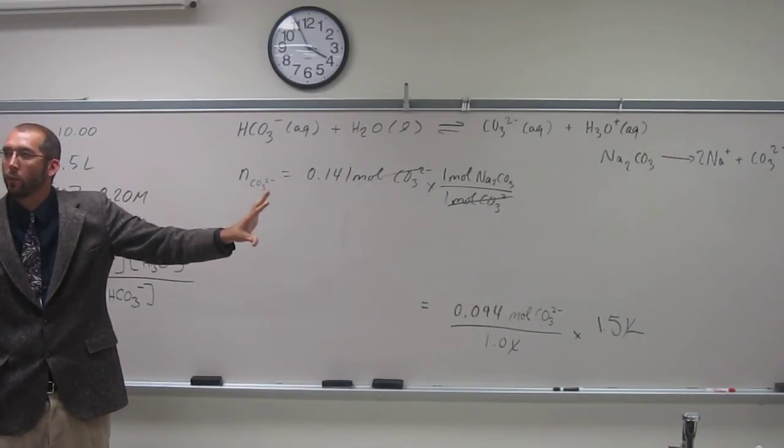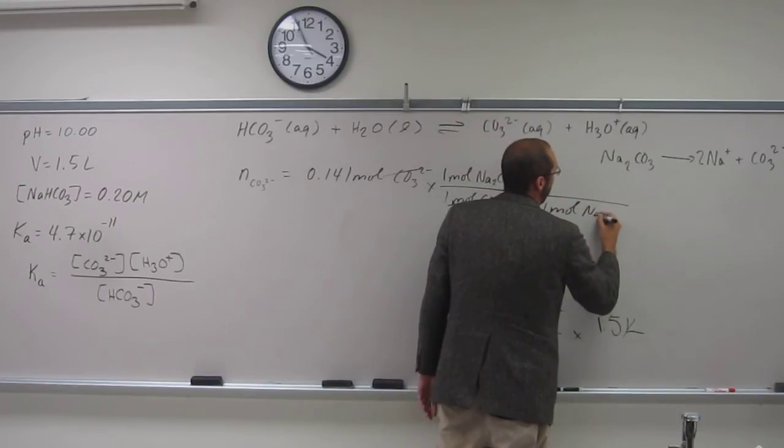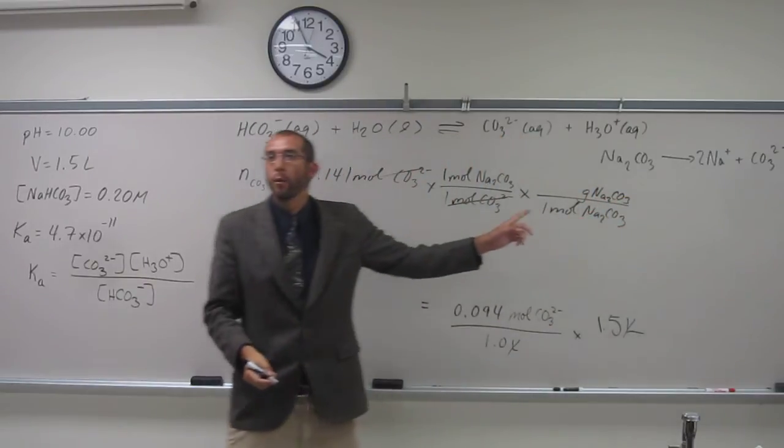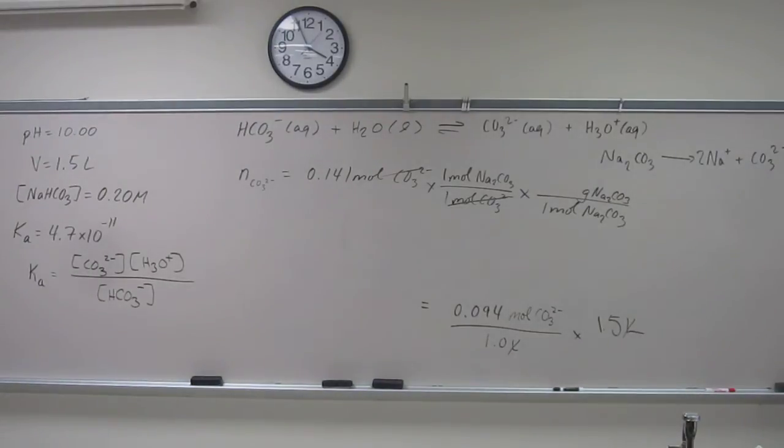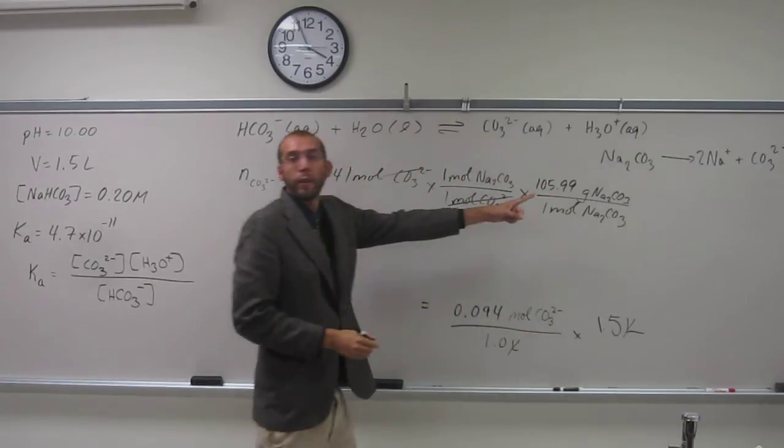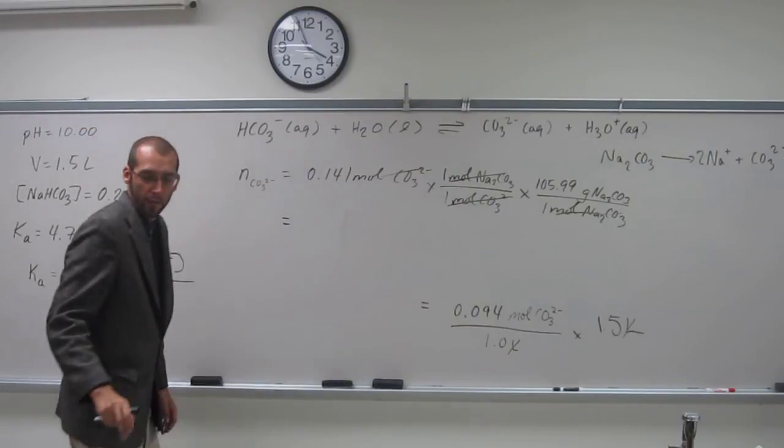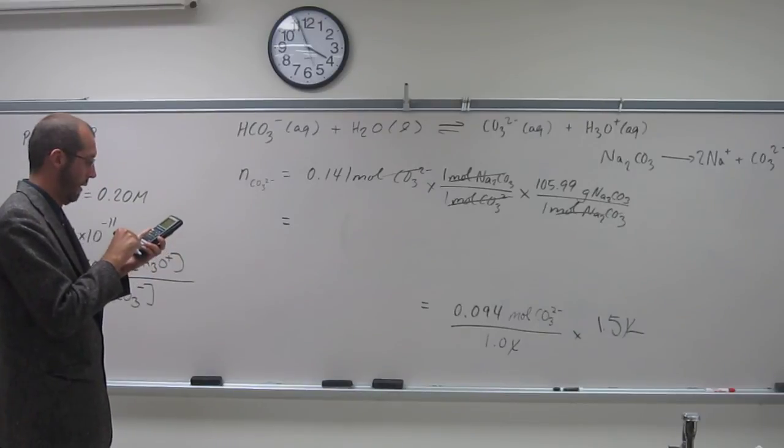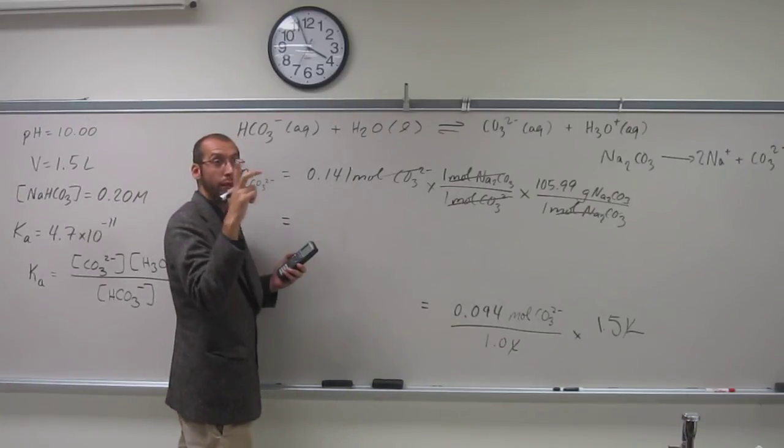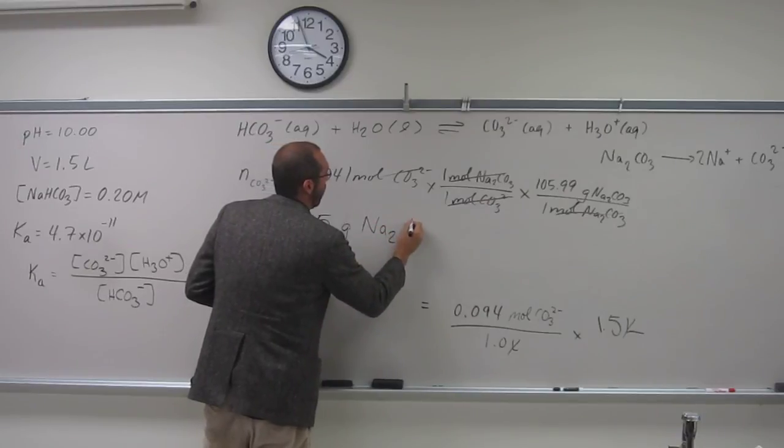That's not what we want - we wanted grams of sodium carbonate. So 1 mole of sodium carbonate, grams of sodium carbonate - that's going to come from the periodic table. I did that earlier, that's 105.99. So when we multiply through times 1, I get 14.9, but we're only going to 2 sig figs, so 15 grams of sodium carbonate.